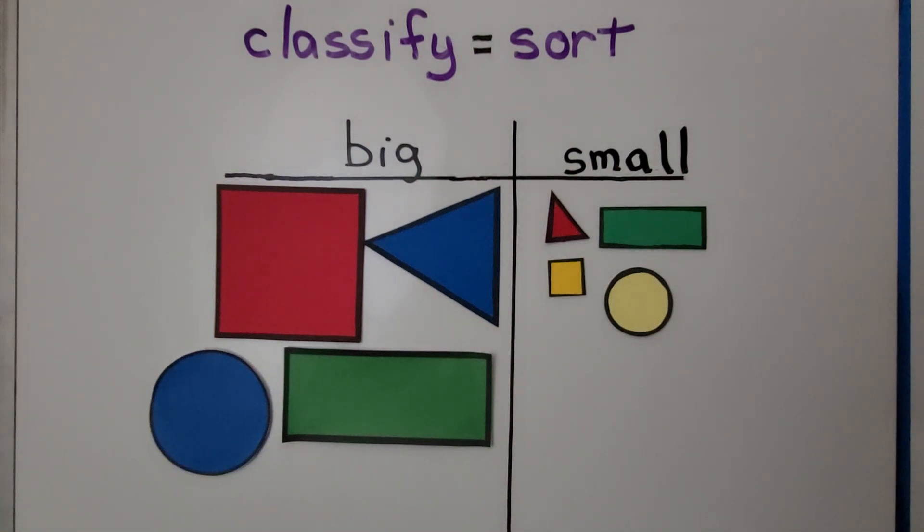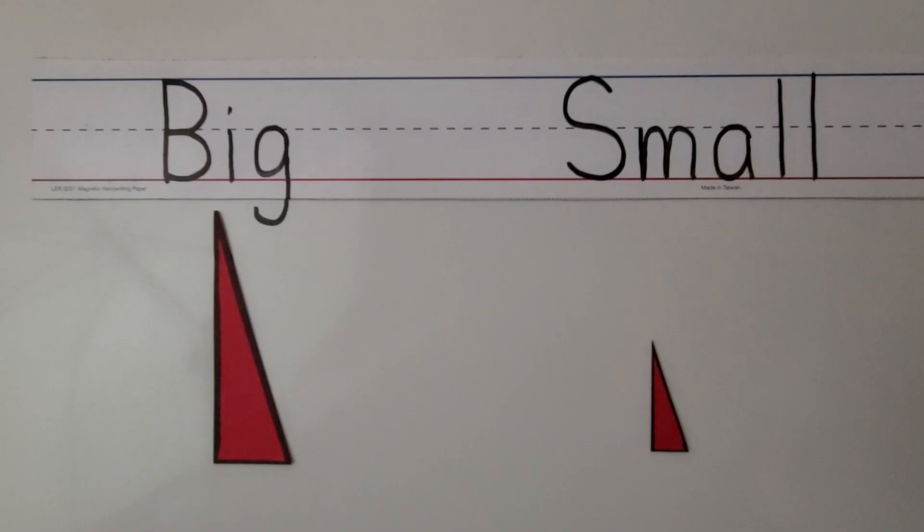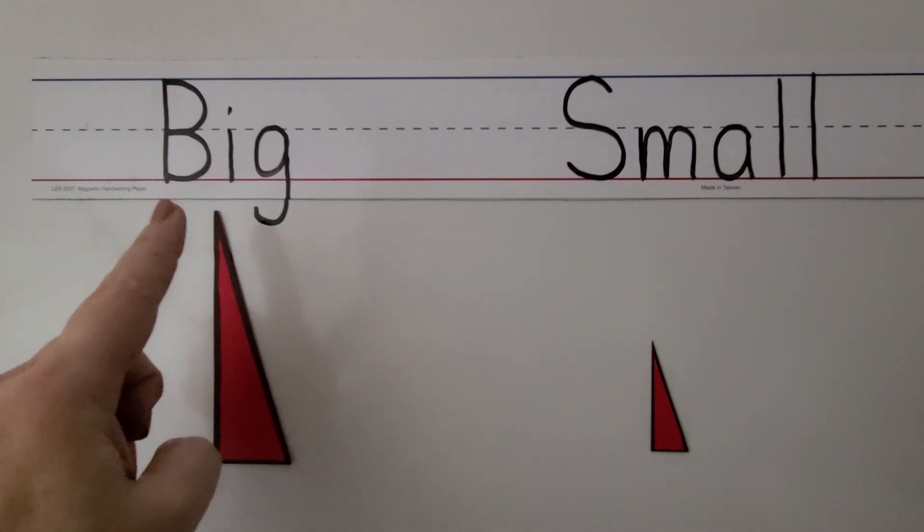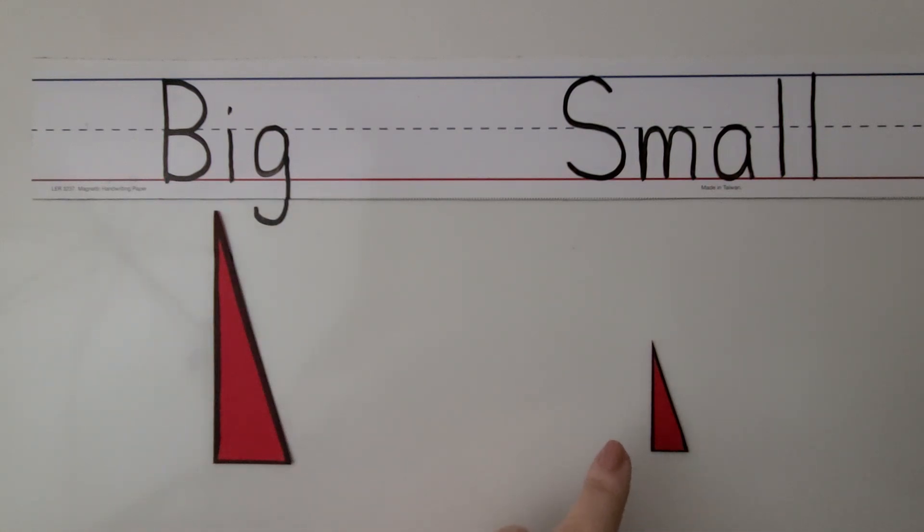So we can sort these shapes, these triangles, into categories of big and small. Here we have two triangles. We have a big triangle, this is the word big, and here we have a small triangle. This is the word small.